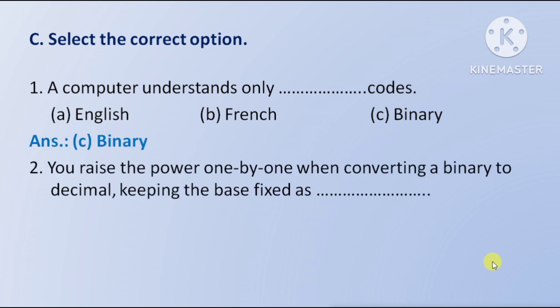Next question: when converting binary to decimal, you raise the power one by one keeping the base fixed as — option A 2, option B 8, option C 10. The right answer is option A, 2.